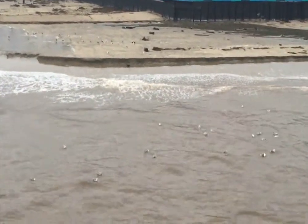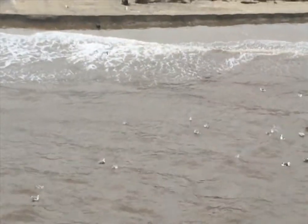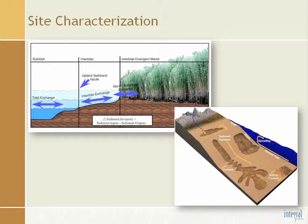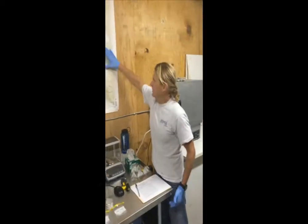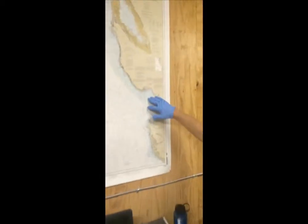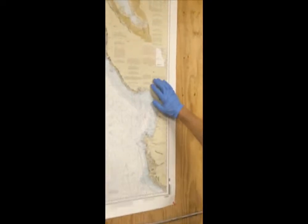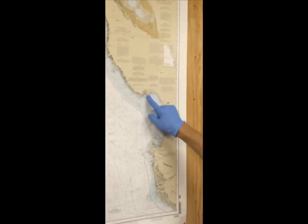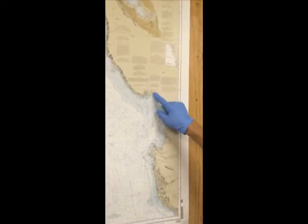Complex sites, such as coastal estuaries, require in-depth description of the key processes in the system. The Integral approach is to develop a complete conceptual model to address a client's needs. This is well suited to sites like Monterey Bay, where waves, rivers, and tides affect transport and water quality.